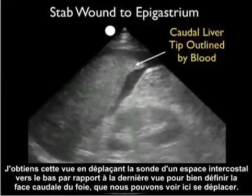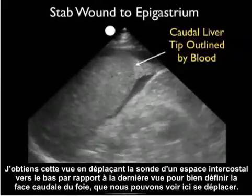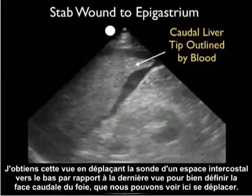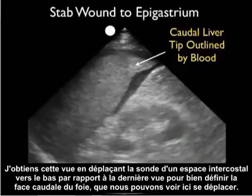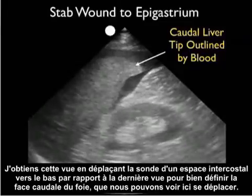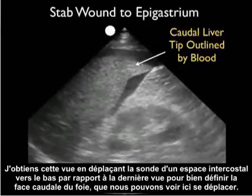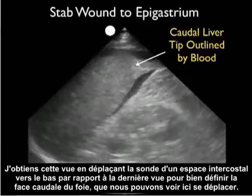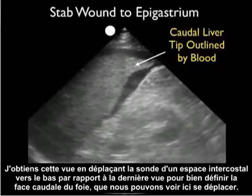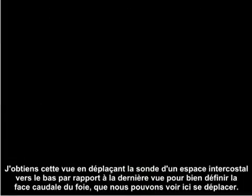I obtained this view by moving the probe one intercostal space inferior from the last view to well delineate the caudal tip of the liver, which we can see here moving around in all the fresh fluid.